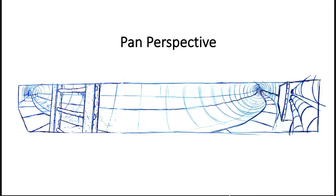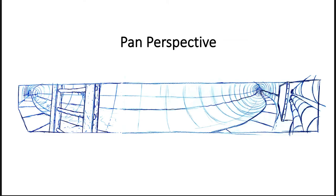Pan perspective - sometimes called banana perspective - moves away from traditional perspective. This is what happens when you move your head around. Imagine a perfectly straight tunnel: you turn your head and look left at the tunnel, then look at a ladder, then turn the other direction and look down the other end. When you combine these two different views of that head movement, you get a distortion - a kind of curve - which is called banana perspective or pan perspective because the viewer's head is panning around. Traditional perspective does not take head movement into account, but certain drawings do.